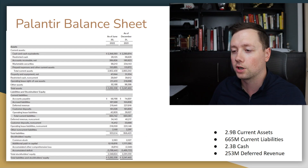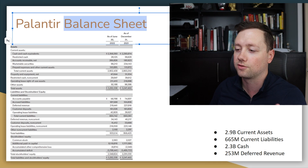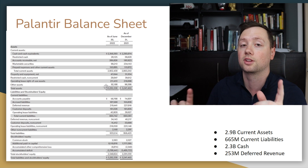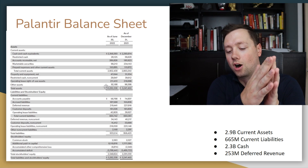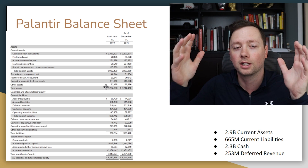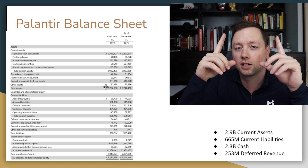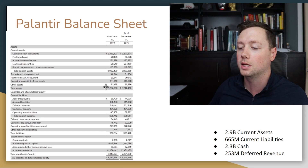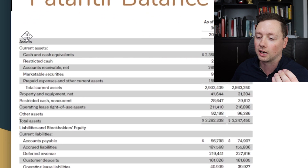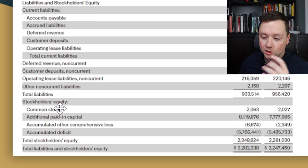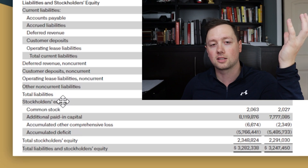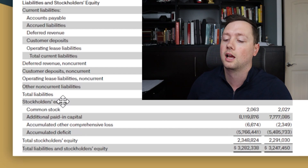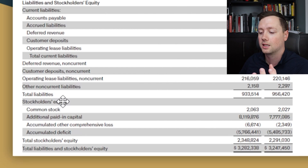The next point to look at is the balance sheet — the second major financial statement you'll want to evaluate with every company. The balance sheet is different from the income statement; it is not a period of time. It's like taking a photo of the company — a snapshot of exactly where the company is today. On the balance sheet you have assets, liabilities, and stockholders' equity. Assets is what the company owns, liabilities is what the company owes to other people, and shareholders' equity is how the company has done so far.